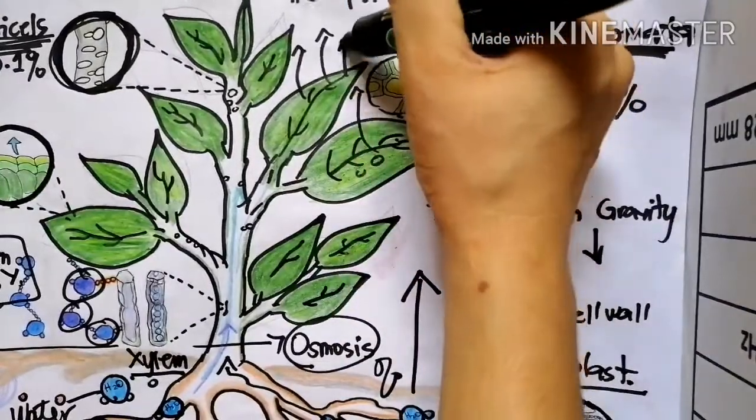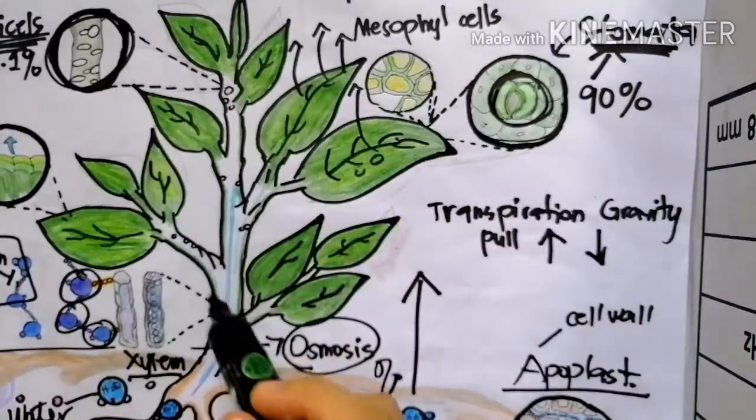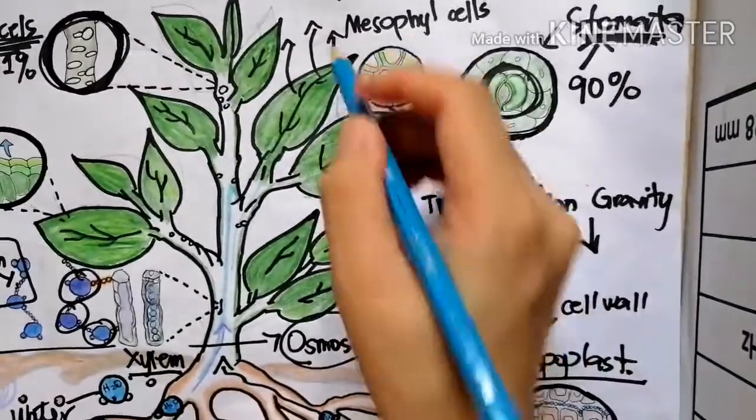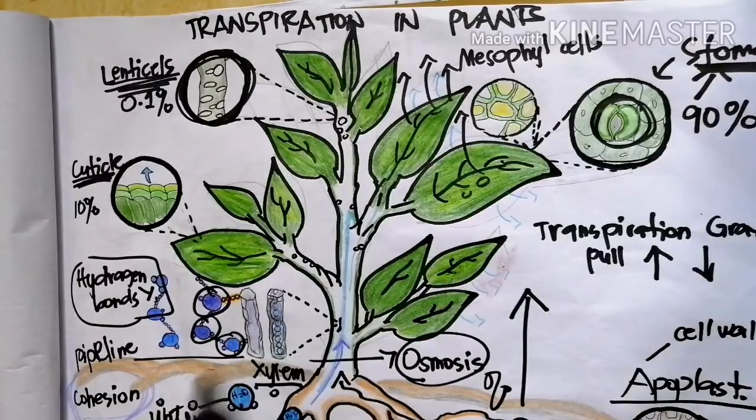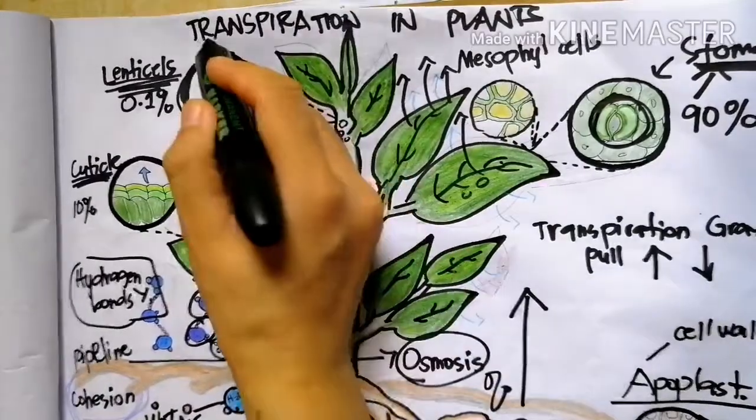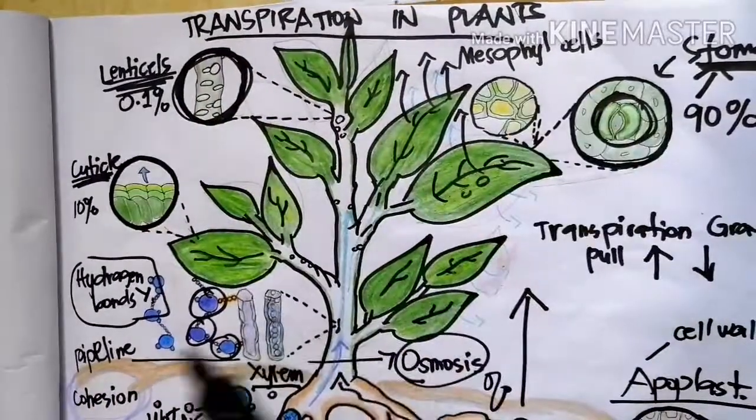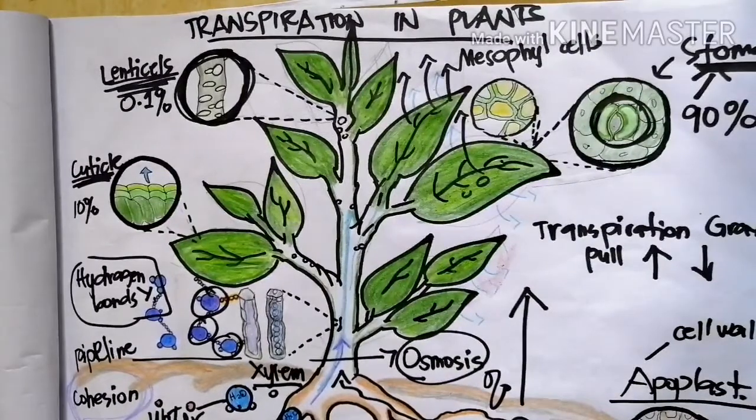In the leaves, the majority of the water vapor is being transpired or evaporated into the atmosphere. That ends the video on transpiration in plants. I hope you have learned something and see you in the next video.